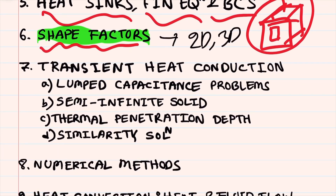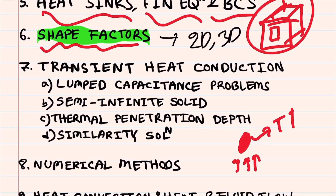After that, we have transient heat conduction, which is very important because in practical problems heat transfer occurs over time and we need to know how temperature varies with time. For example, if you are heating up a coin, you want to know the temperature of that coin after one second or after five seconds of heating.